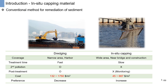Conventionally, to improve contaminated coastal sediment, most governments and researchers suggest dredging and in-situ capping as remediation methods. However, there are wide differences in coverage area. Dredging can focus only on narrow areas like harbors because it requires heavy machinery, ships, fuel, and manpower — all of which cost a lot. In contrast, in-situ capping can cover wide areas near beaches and construction sites where dredging cannot reach.